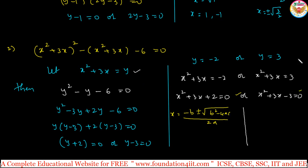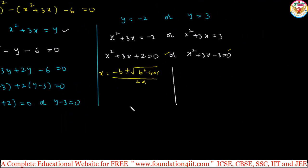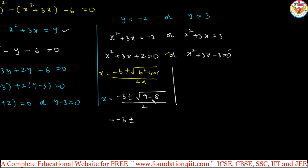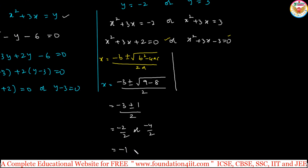Let me show you that here. For x squared plus 3x plus 2 equals 0, apply x equals minus b plus or minus square root of b squared minus 4ac, divided by 2a. That gives: minus 3 plus or minus square root of 9 minus 4 times 1 times 2, divided by 2. That is minus 3 plus or minus square root of 9 minus 8, divided by 2. Square root of 1 is 1. Taking plus: minus 3 plus 1 is minus 2 by 2, giving minus 1. Taking minus: minus 3 minus 1 is minus 4 by 2, giving minus 2.